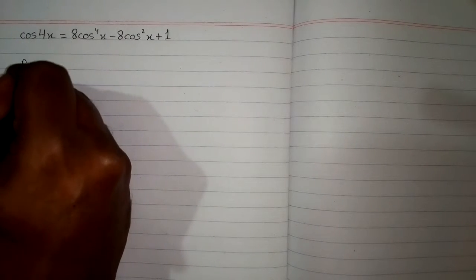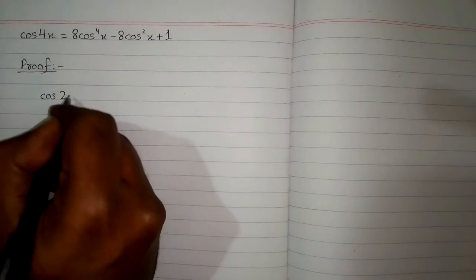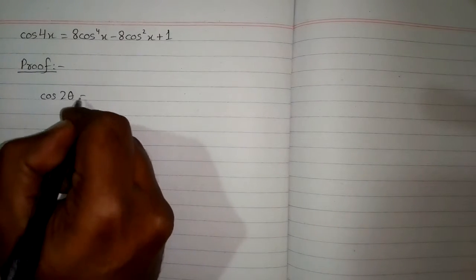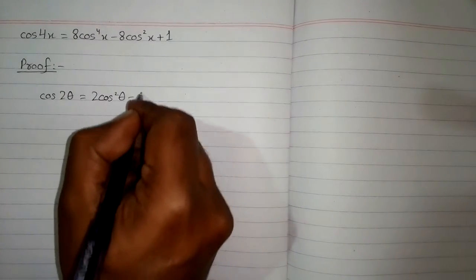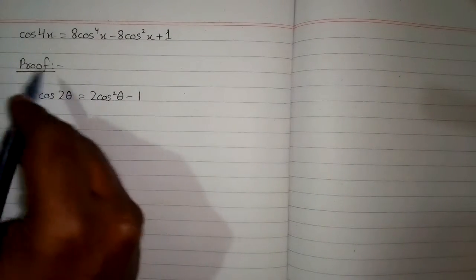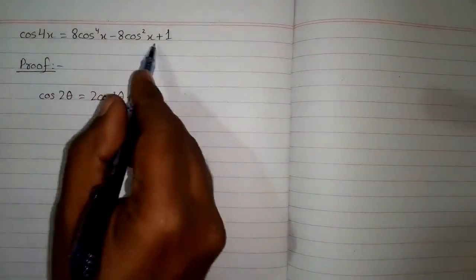In this video we will prove the trigonometric identity cos(4x) = 8cos⁴x − 8cos²x + 1. To do this, we will use the formula cos(2θ) = 2cos²θ − 1.